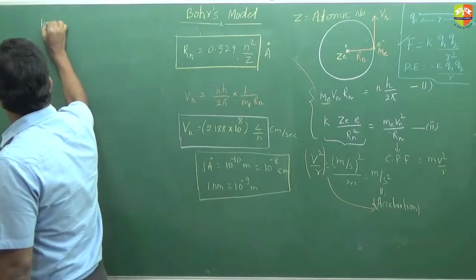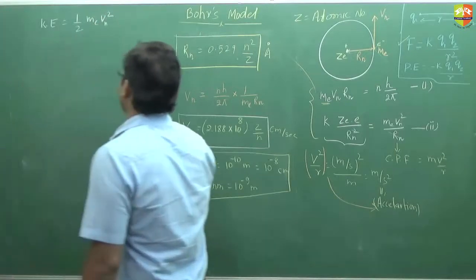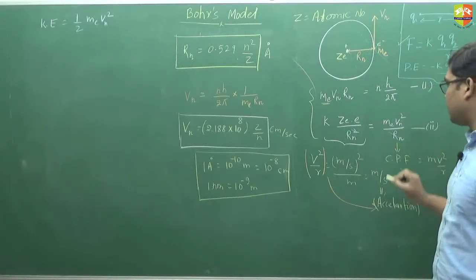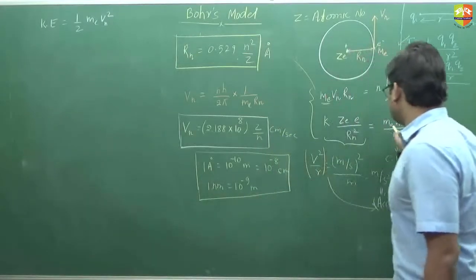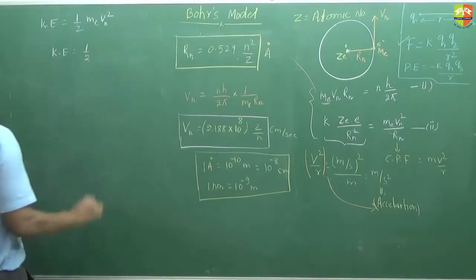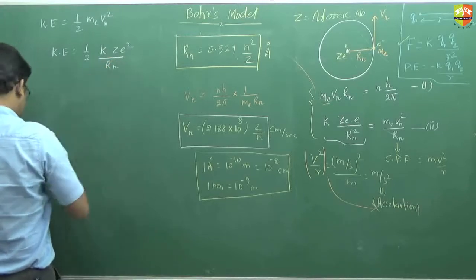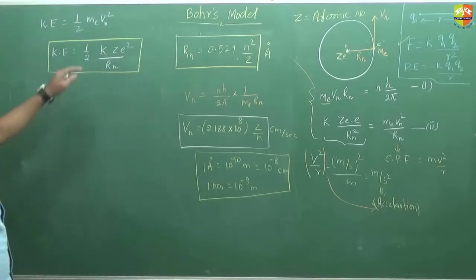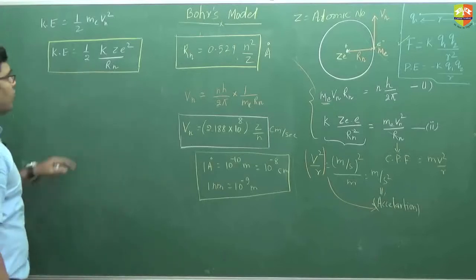What is the kinetic energy of the electron? Kinetic energy equals half·m_e·v_n². Now, m_e·v_n² we are substituting from equation 2. So kinetic energy equals half into k·z·e² divided by r_n. You can also substitute v_n directly to get the expression, but we are going to establish a relation here using this form.